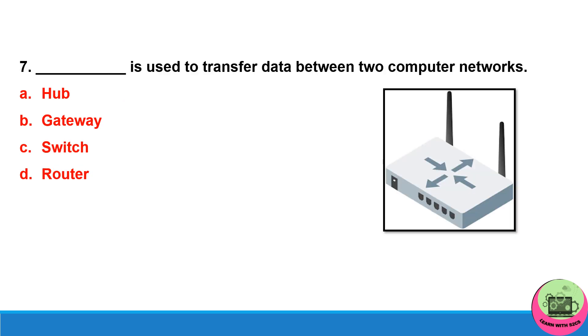Next: dash is used to transfer data between two computer networks. The answer will be router — you can see the figure as well.